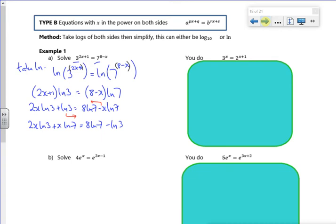Oh my word. I can take out x as a factor. So I've got 2 ln 3 plus ln 7 on the left. 8 ln 7 minus ln 3 on the right. And then divide through by that bracket gives me 8 ln 7 minus ln 3, all divided by 2 ln 3 plus ln 7. It's just algebra.